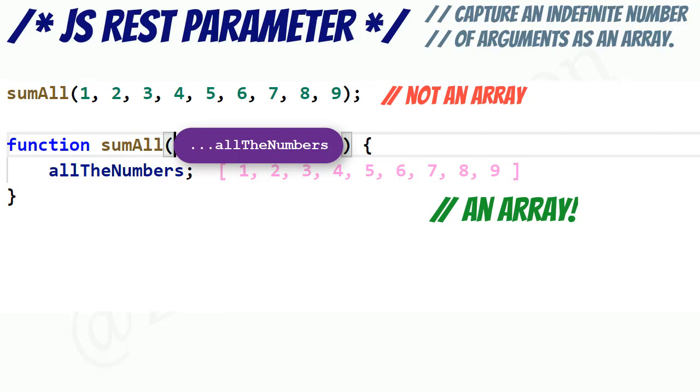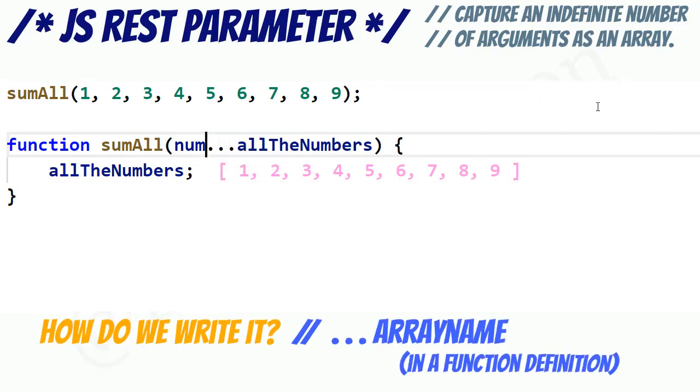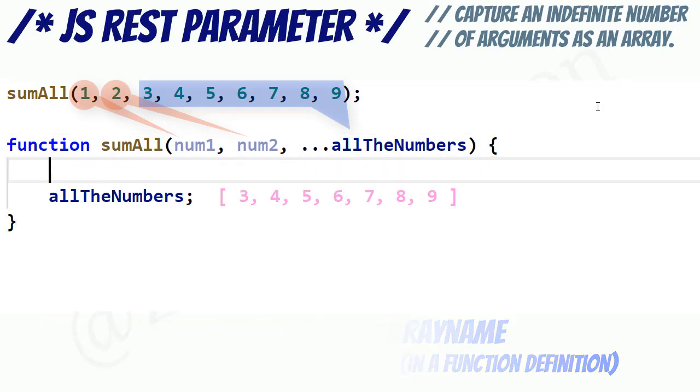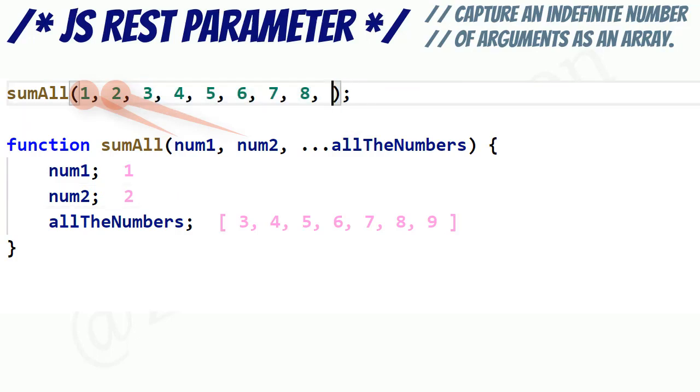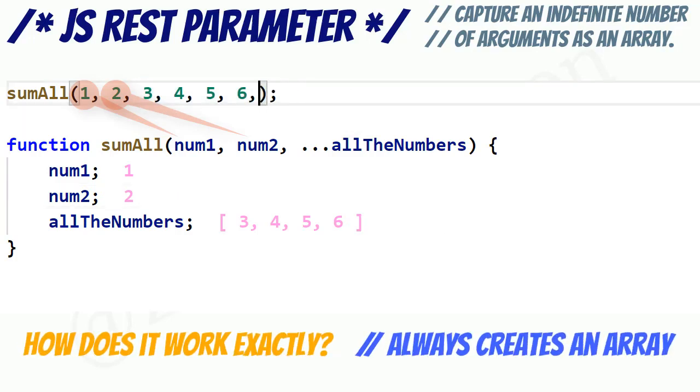I say that it collects the remaining arguments because you can have named parameters that will have values bound to them first, and the rest parameter will collect the rest. Notice that the rest parameter always creates an array, even if there are no arguments for it to collect.